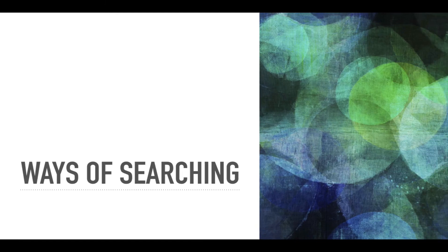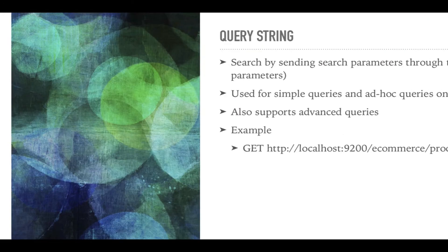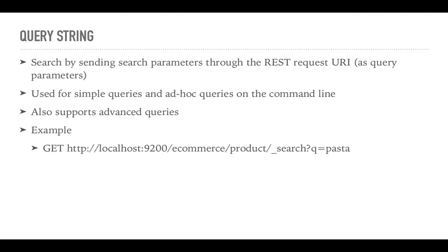Now I will briefly introduce the two ways of searching with Elasticsearch: by query string and using the query DSL. The first way is with query strings. This method uses only a URL to perform searches, and the search query is defined by using a Q query parameter.